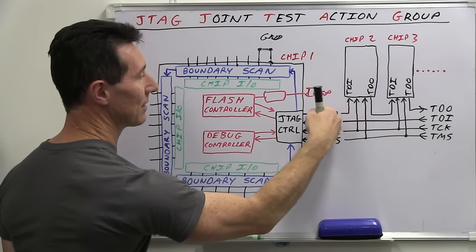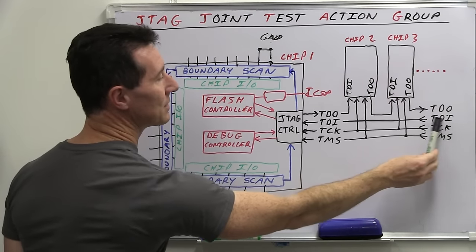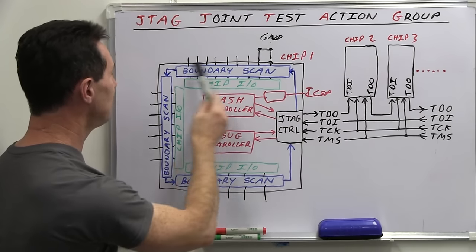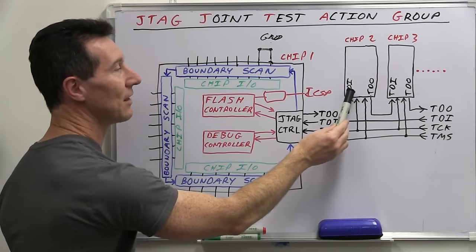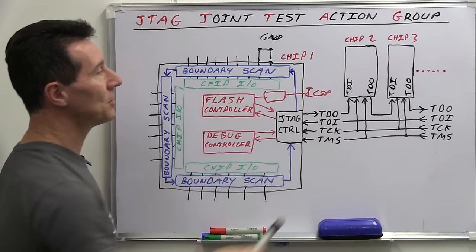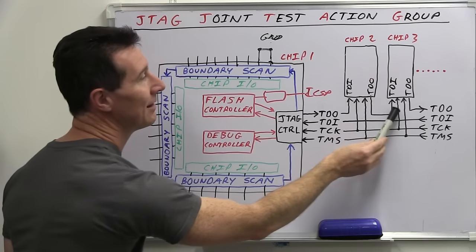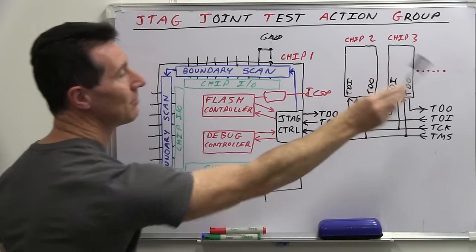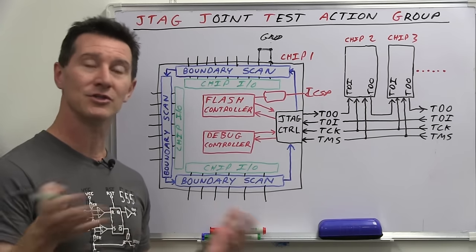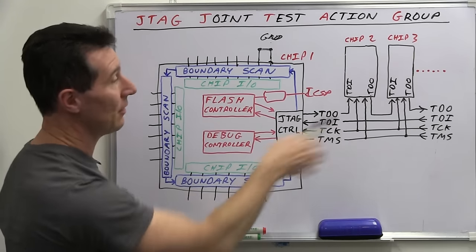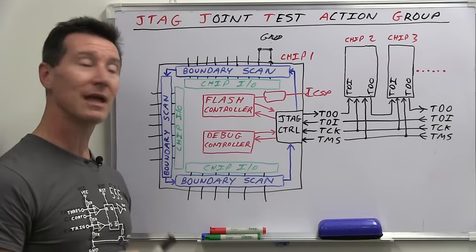And it goes through its big JTAG daisy chain in there, comes out the TDO pin, and then you can daisy chain that to a third chip, and so on, and so on. And you can have as many chips as you like, subject to electrical design rules and bus loading and all that sort of stuff. You can have as many devices in series as you like.